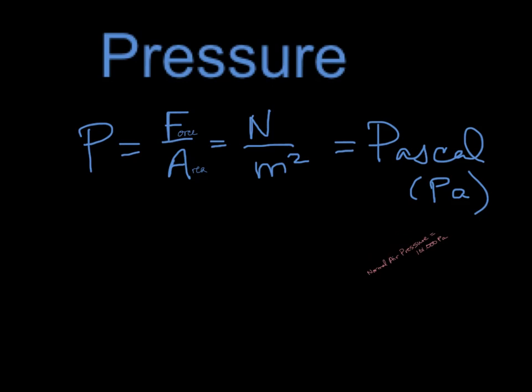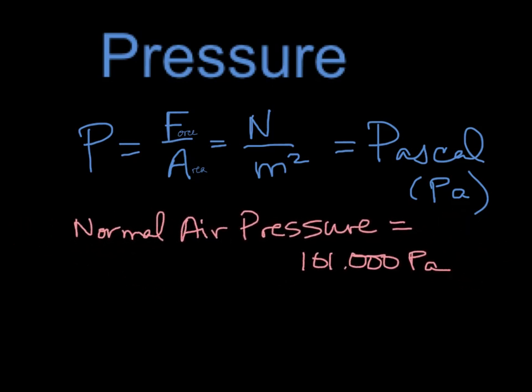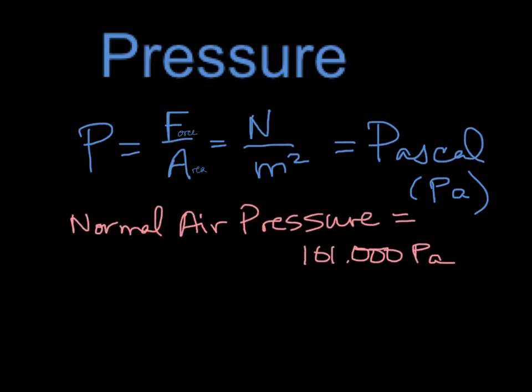What that means is there's 101,000 pascal, or newtons, on every square meter of your body. And your body has a surface area of one and a half to two square meters, so that's a lot of pressure.